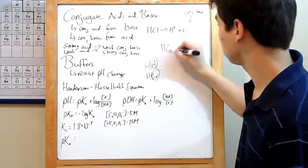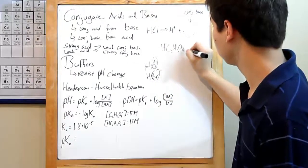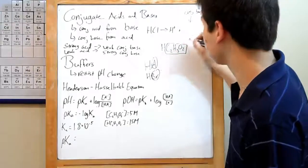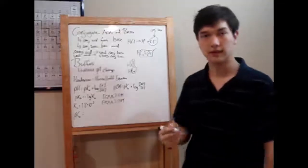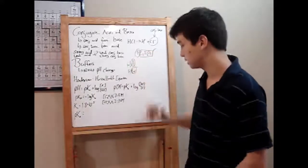In acetic acid, HC2H3O2, the acetate ion is your, well, that's your A. It's your negative ion, and this is just your H. You see that down here.